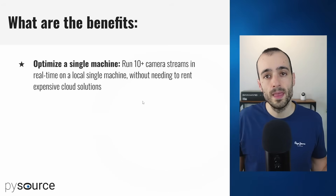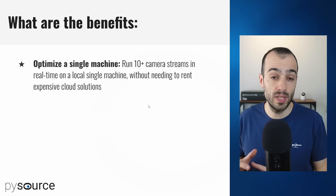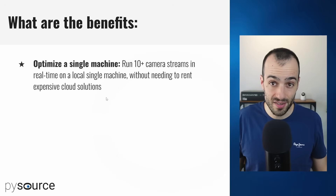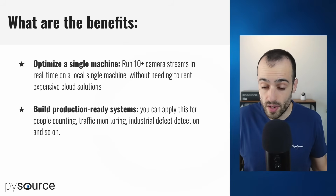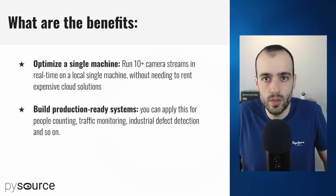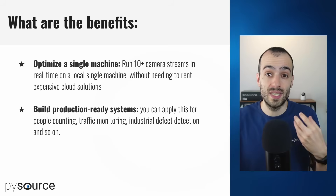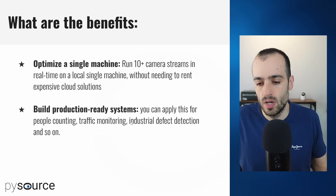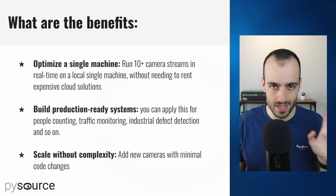First, you can optimize to run everything on a single machine, so you don't need to rent expensive server solutions on the cloud. Here I'm running on a consumer desktop device 10-plus cameras, and with better hardware I can run even more with a high frame rate. You can build production-ready systems for traffic monitoring, vehicle counting, people counting, or industrial defect detection — from multiple locations or with multiple cameras on the same product for high-precision detection. This also lets you scale without complexity by adding multiple cameras with minimal code changes.